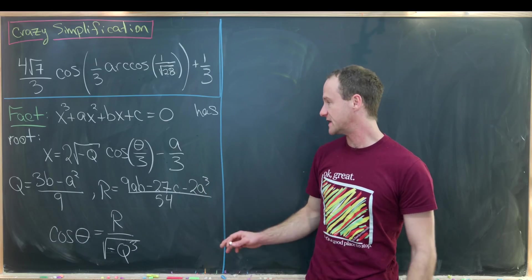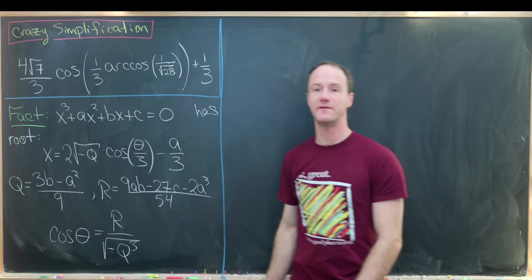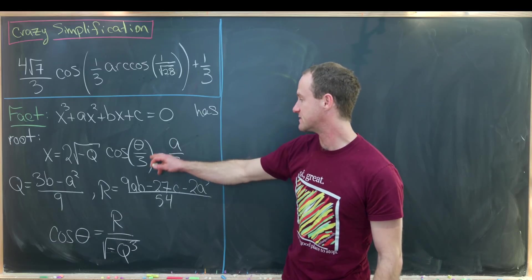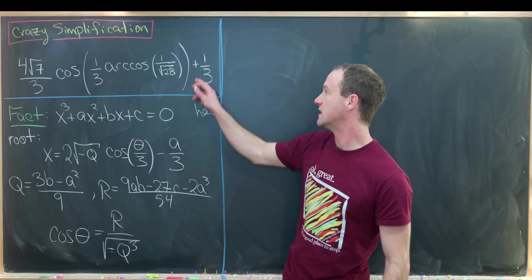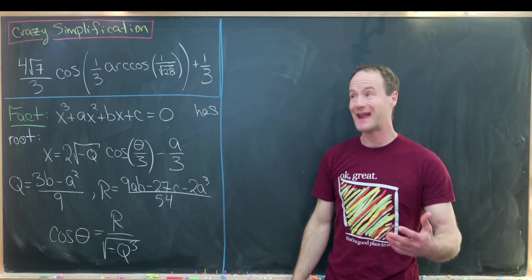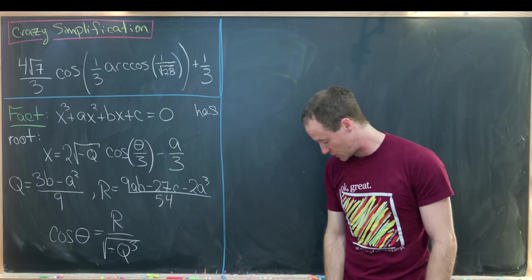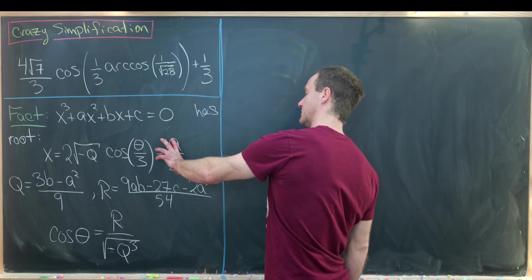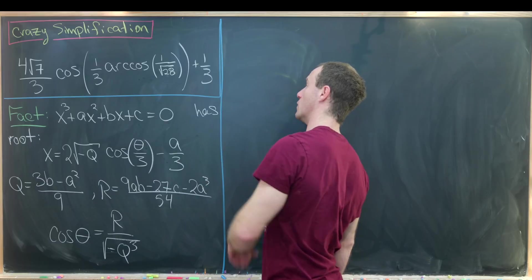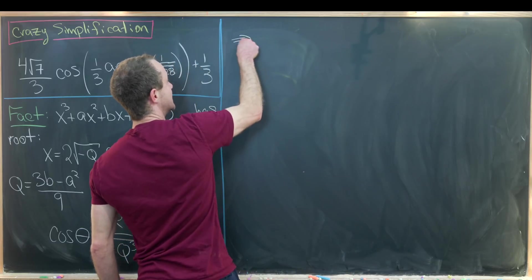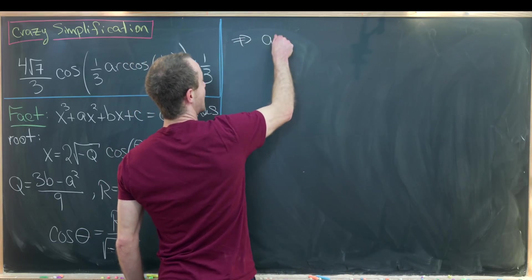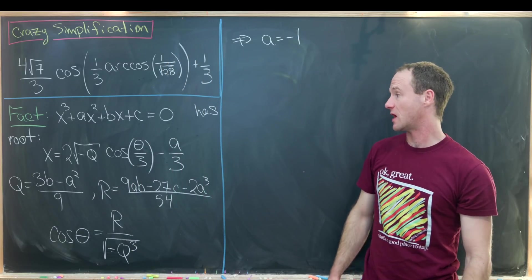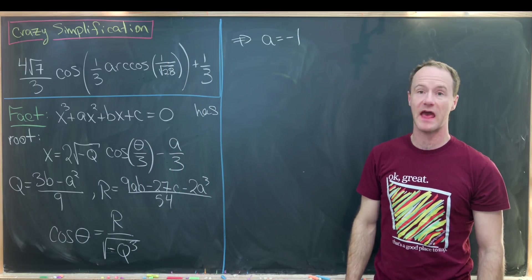It'll be easiest to find the coefficient a first. We need minus a over three to be equal to one third, that is if this is the root of a cubic polynomial. So minus a over three equals one third tells us that a is equal to negative one. So that's our first job done — finding the value of a.